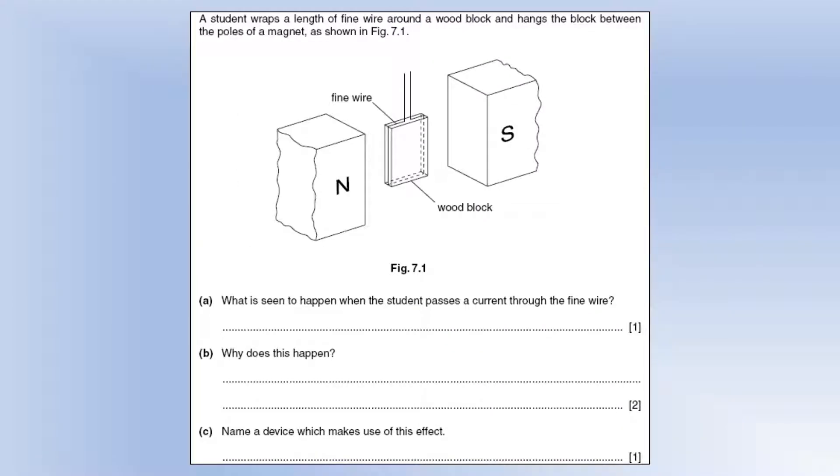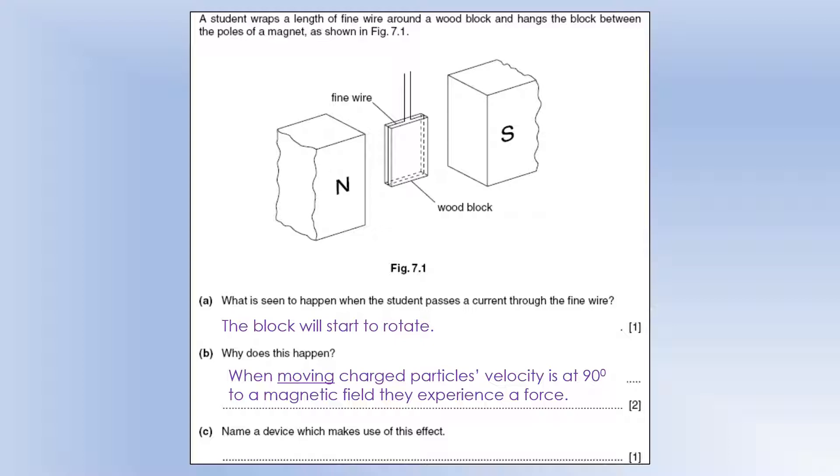A student wraps a length of fine wire about a wood block and hangs the block between the poles of a magnet as shown. What is seen to happen when the student passes a current through the fine wire? Well, the block is going to start to rotate. And depending on the direction of the current, that will tell you which way it will rotate. And why does that happen? Well, we've got the moving charged particles velocity, the current essentially, is at 90 degrees to the magnetic field. So we're looking at the current in the vertical sides that we're talking about here. And so if you have that scenario, they're going to experience a force because of the interaction of their two fields. So because those forces are going to be in opposite directions, because let's say on the left-hand vertical side the current is going upwards, that would mean on the right-hand side the current is going downwards and currents in opposite directions give you forces in opposite directions and they both act to rotate it in the same direction or produce a torque.